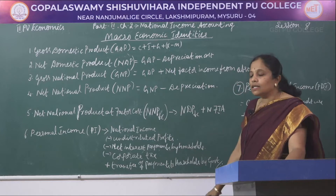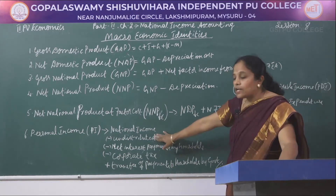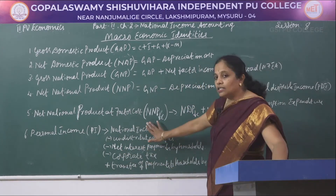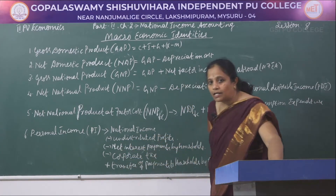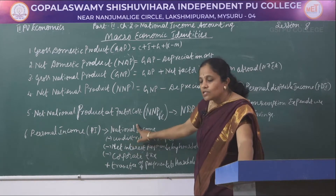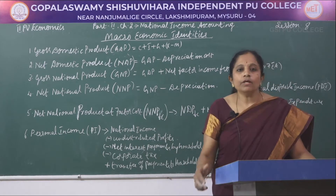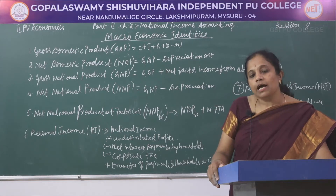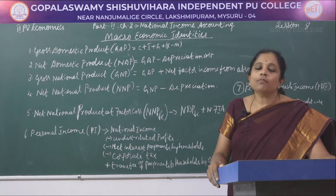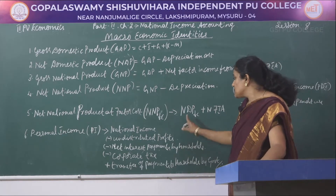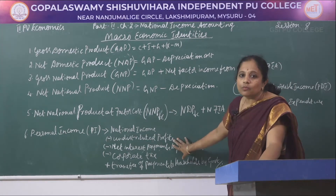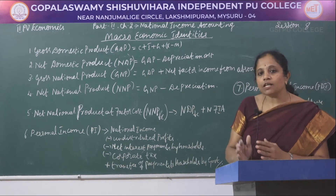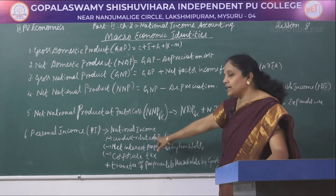The sixth identity is personal income, derived from national income with three deductions and one addition. The first deduction is undistributed profits — the government and economy earn income from industries and generate taxes and revenues, but not all of this is distributed in a given year. These undistributed profits are kept as reserves or savings and are deducted.